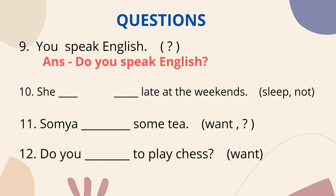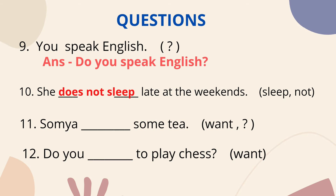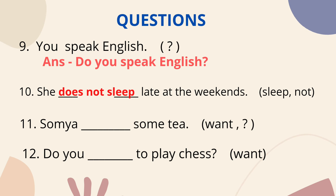Question no.10: change the sentence to negative. Positive form: 'She sleeps late at the weekends.' To add 'not,' we introduce the helping verb 'does.' So: 'She does not sleep late at the weekends.' Notice we changed 'sleeps' to 'sleep' — base form is used because 's/es' is already carried by 'does.'